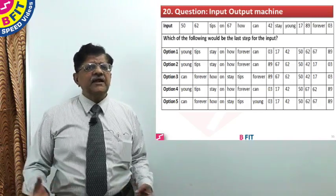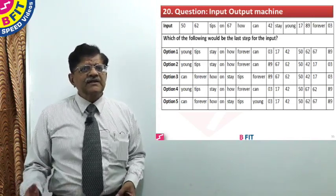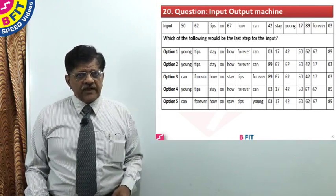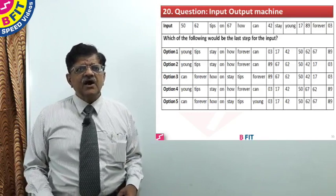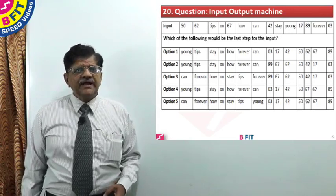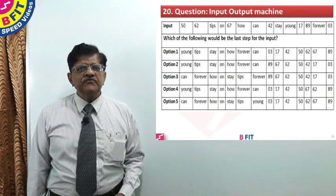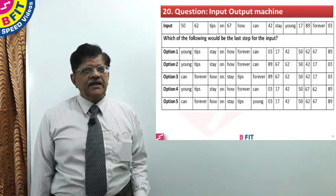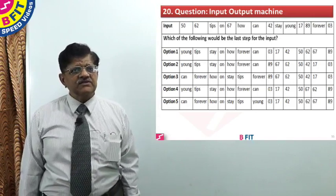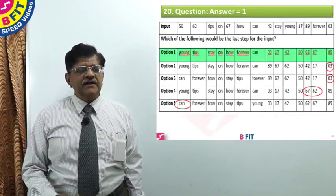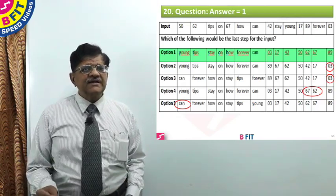Simply by looking at the options we can eliminate options 2, 3, 4, and 5. We are left with only option 1. Let us verify: alphabets Y, T, S, O, H, F, C — in descending order — and numbers 0, 3, 17, 42, 50, 62, 67, 89 in ascending order, which is the final step. Therefore, the correct answer for question number 20 is option 1, arrived at by eliminating the wrong options without working it out in detail. Using this method, you will be able to arrive at the answer very quickly.